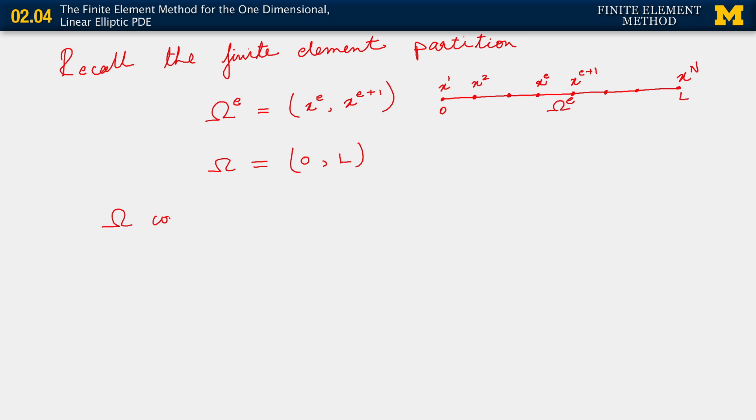So omega contains the points x2, x3, and so on, up to x_{n-1}. And I note that since we're using NEL for number of elements, we also have the following relation, right?